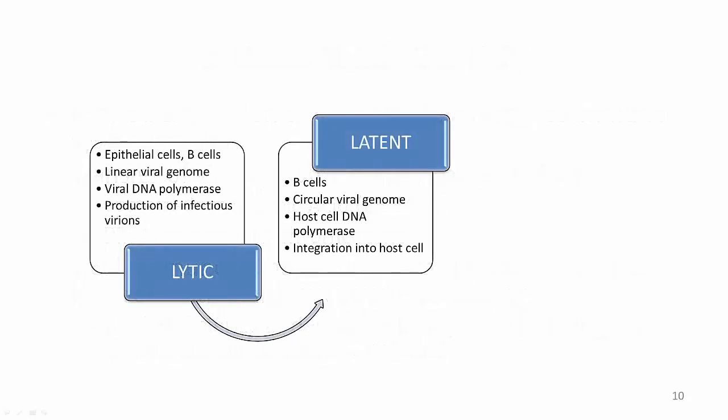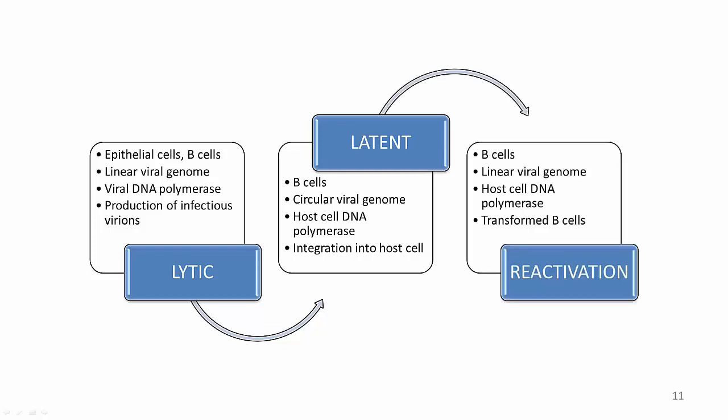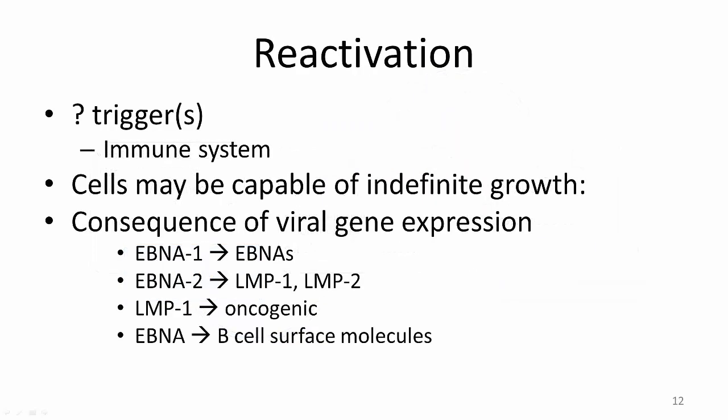So far we have discussed the lytic and latent stages of EBV infection. Many, if not most, adults harbor EBV-infected B lymphocytes that have this potential for unlimited growth. However, some B cells can go from a latent to a reactivated state in which the viral genome, still transcribed by the host cell DNA polymerase, re-linearizes and ultimately transforms the infected B cell into one with unlimited and at times unregulated growth. Exact triggers that cause infected B cells to reactivate are not entirely clear, but an important one is the immune system. In patients with T cell deficiencies, EBV lytic and latent gene expression may be prolonged and continue uncontrolled. Severe T cell immunodeficiency in humans, such as occurs in organ transplantation and AIDS, is associated with lymphoproliferative syndromes involving B lymphocytes naturally infected with EBV.